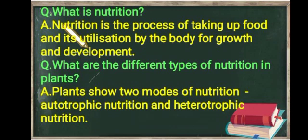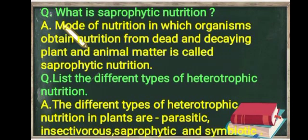The next question is: what are the different types of nutrition in plants? Plants show two modes of nutrition — autotrophic nutrition and heterotrophic nutrition. The next question is: what is saprophytic nutrition? The mode of nutrition in which organisms obtain nutrition from dead and decaying plant and animal matter is called saprophytic nutrition.